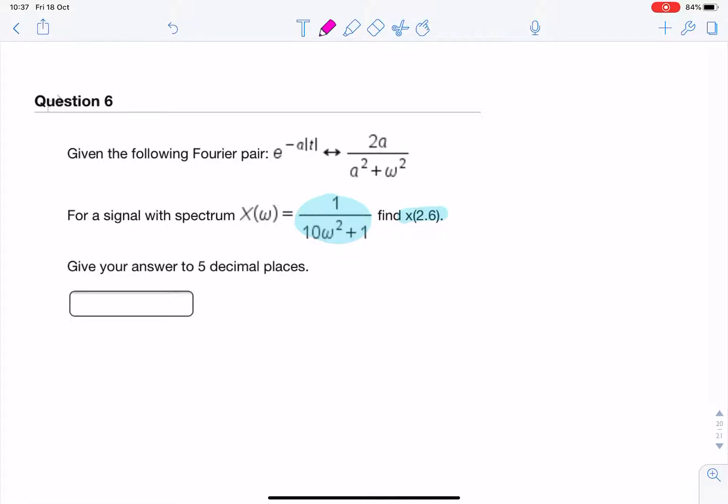So the 2.6, that's the value of t. And somehow we need to make these two look the same.